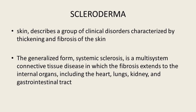Coming to scleroderma: there is excessive fibrosis throughout the body, especially in the skin, describing a group of clinical disorders characterized by thickening and fibrosis of the skin. One can notice a claw hand and mask-like face in patients. There is also microvascular disease present in some patients. The generalized form, systemic sclerosis, is a multisystemic connective tissue disease in which fibrosis extends to internal organs including the heart, lung, kidney, and gastrointestinal tract.